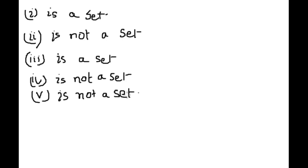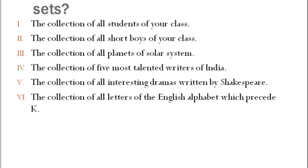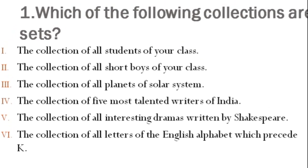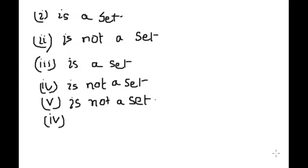Next come to question number 6. The collection of all letters of the English alphabet which precede K. There is no doubt about how many alphabets precede K. These are the alphabets which precede K, and no one can change this. So we can write this in a set.